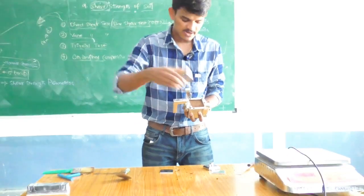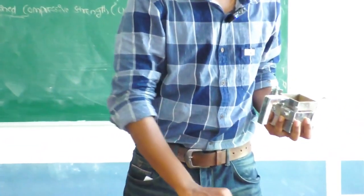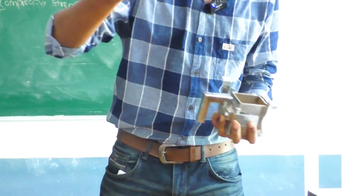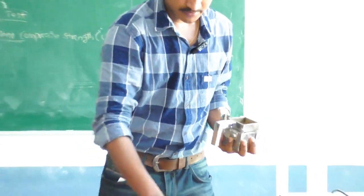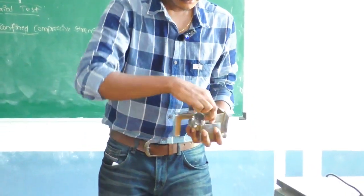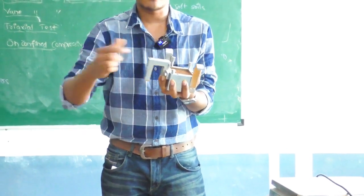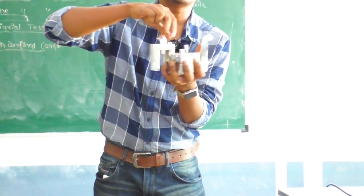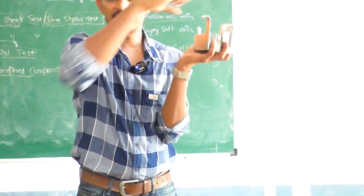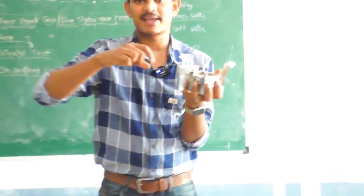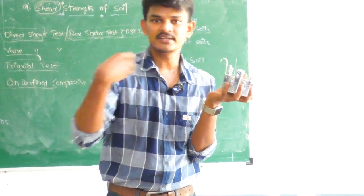We take the soil sample and directly place it here, then push it using this metal piece into the mould. Basically the mould is removable. We can remove this part, and we have clamps here. By adjusting the clamps, we can create the space, which is helpful in shearing.